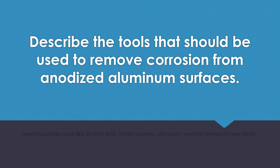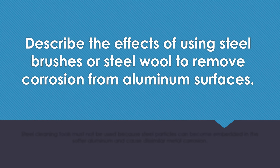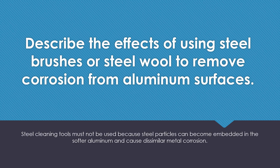Describe the tools that should be used to remove corrosion from anodized aluminum surfaces. Nylon scrubber pads like Scotch-Brite, bristle brushes, aluminum wool, or aluminum wire brush. Describe the effects of using steel brushes or steel wool to remove corrosion from aluminum surfaces. Steel cleaning tools must not be used because steel particles can become embedded into the softer aluminum and cause dissimilar metal corrosion.